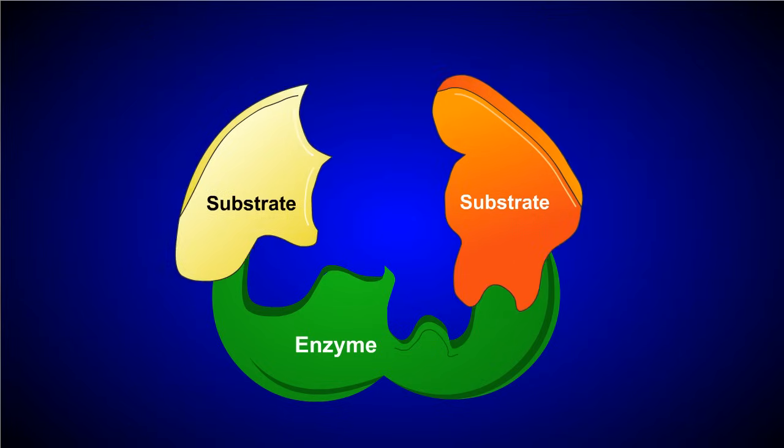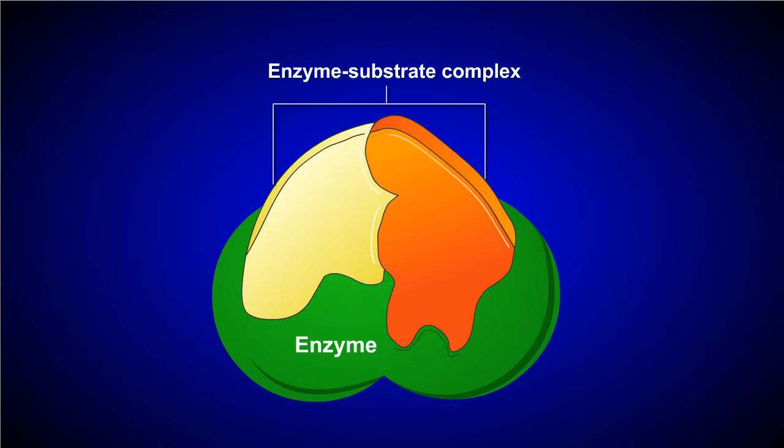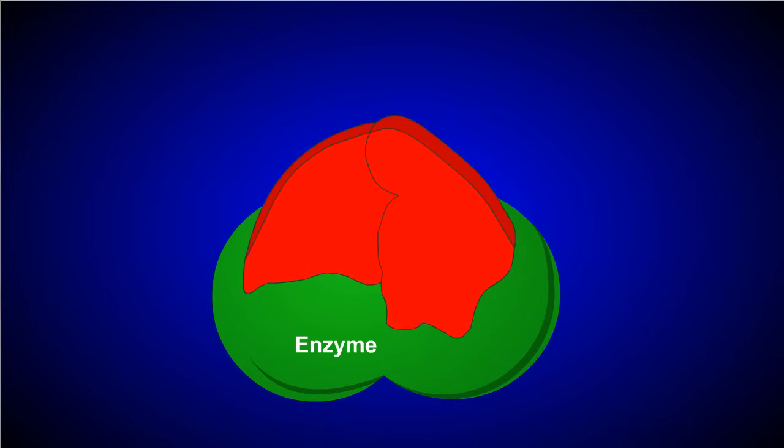Once the substrates bind to the active site, they form what's called an enzyme-substrate complex. As the enzyme and substrates begin to react, some of the chemical bonds in the substrates begin to weaken, causing them to link together.